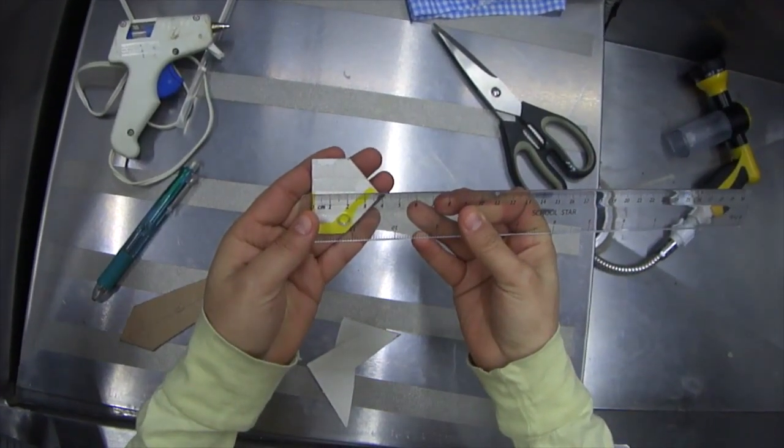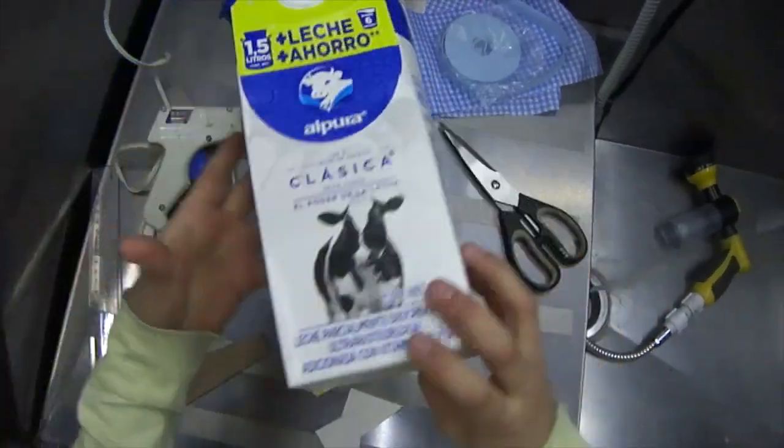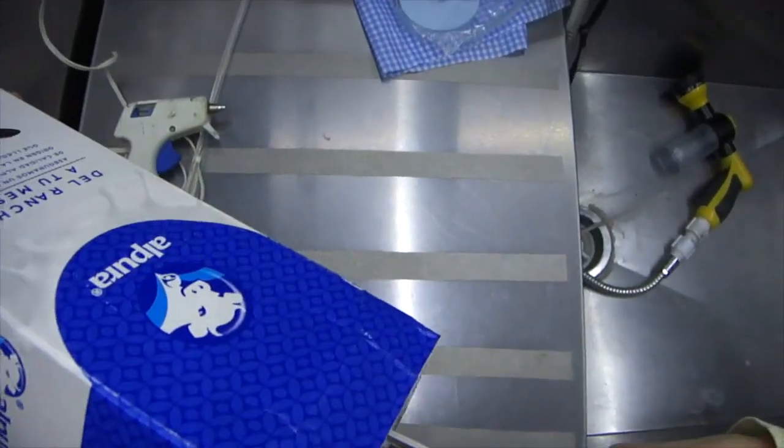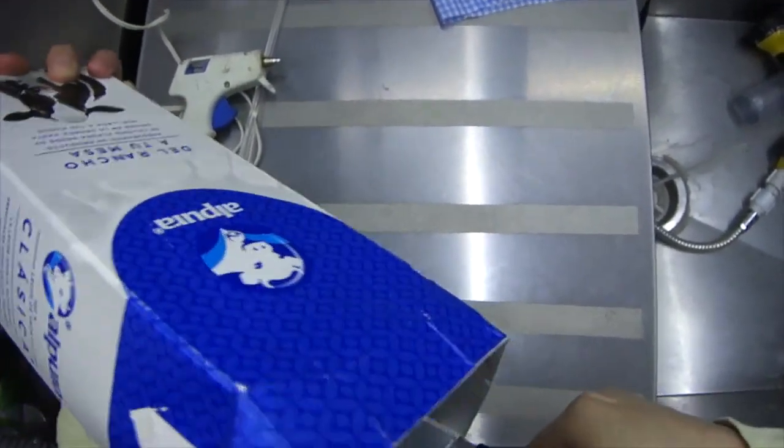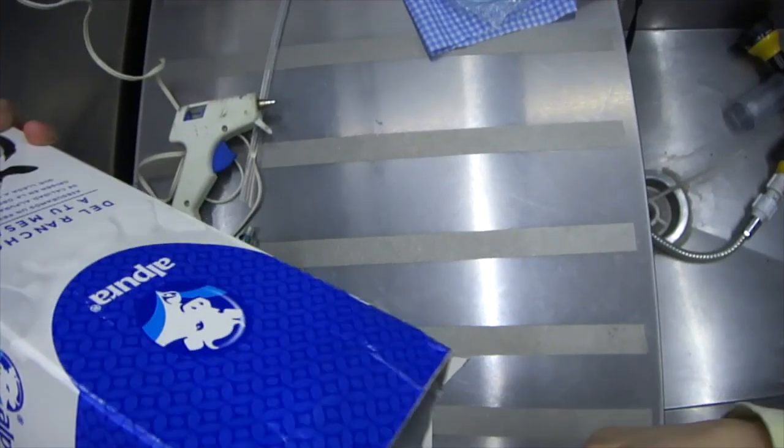We're also going to use this little piece which measures four and a half centimeters by four centimeters. This is our milk carton—it's already been washed out and dried. The brand doesn't really matter; all we need is the material it's made out of.